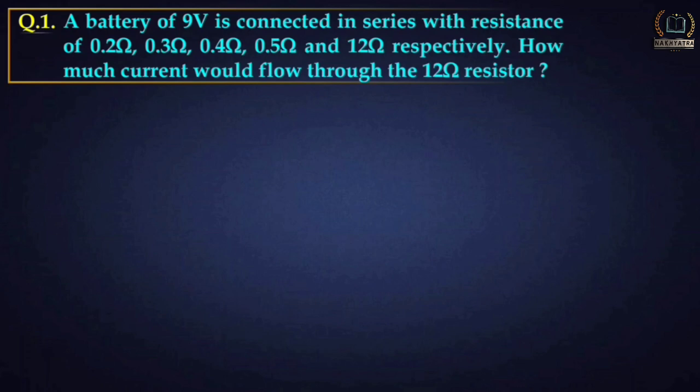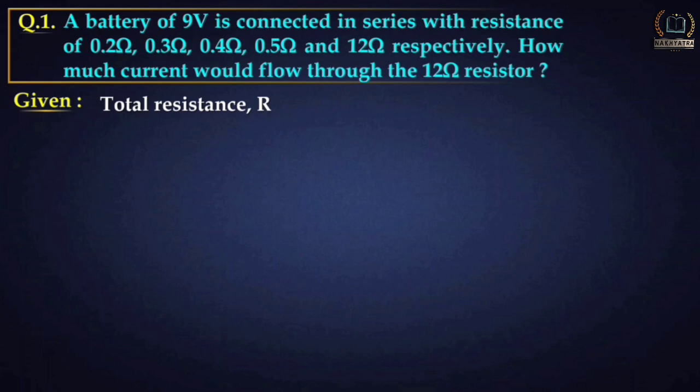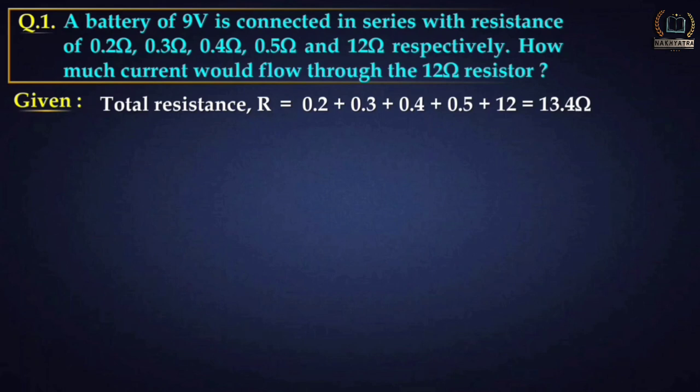Question number one: a battery of 9 volt is connected in series with resistances of 0.2 ohm, 0.3 ohm, 0.4 ohm, 0.5 ohm, and 12 ohm respectively. How much current would flow through the 12 ohm resistor? Write the given values. When we add all the resistances we get R equal to 13.4 ohm.